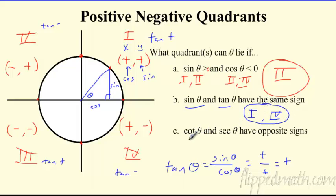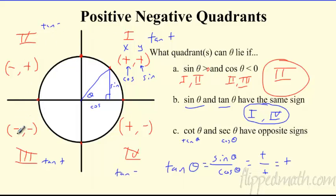One more: cotangent and secant have opposite signs. Secant follows the same sign rules as cosine, and cotangent follows the same sign rules as tangent. So where are cosine and tangent opposite in sign? In quadrant three, cosine is negative and tangent is positive — opposite. In quadrant four, cosine is positive and tangent is negative — opposite. So the answer is quadrants three and four.